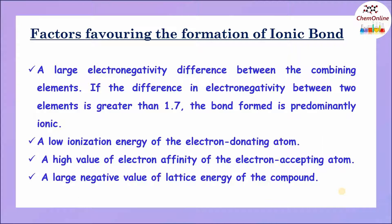What are the factors favoring the formation of an ionic bond? If there is a large electronegativity difference between the combining atoms, then it will favor the formation of an ionic bond. To be more specific, if the difference in electronegativity between the two atoms is greater than 1.7, then the bond formed is predominantly ionic.